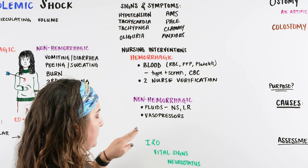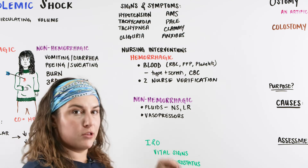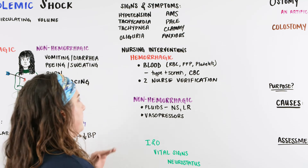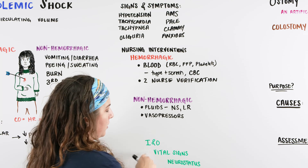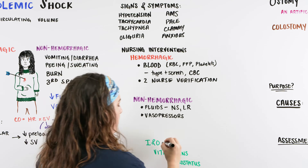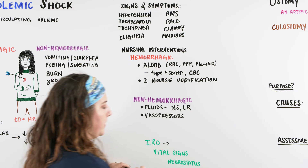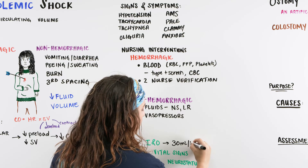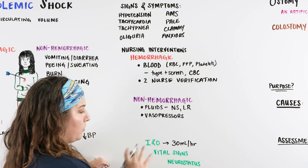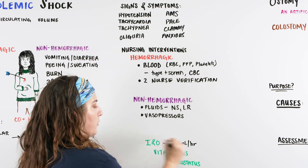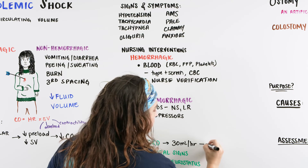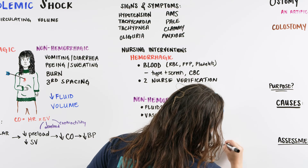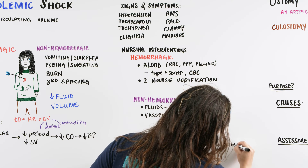What are some other things we can do for this patient? How do we know that their fluid volume is starting to come back? We are going to be doing I and O. What is the output the patient should be having? Patients should be having 30 milliliters per hour so we know our kidneys are working the way they should. So what are they going to need for this? A urinary catheter.